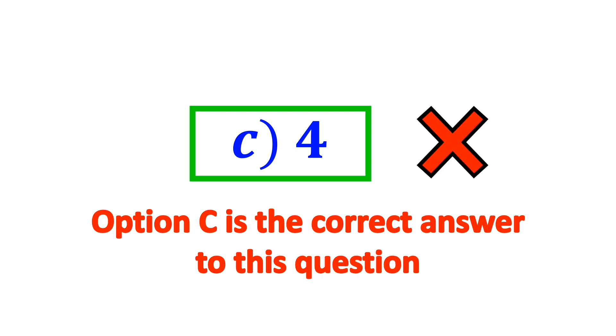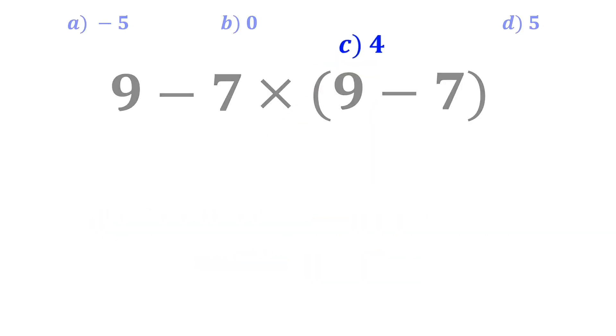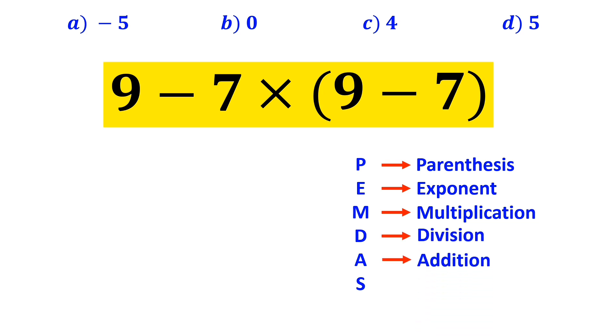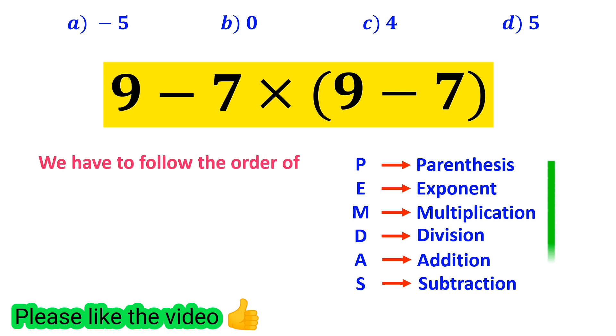But that's definitely wrong. Now let me show you how to solve this expression properly. To solve this question, we need to follow the PEMDAS rule. In this rule, P stands for parenthesis, E stands for exponent, M stands for multiplication, D stands for division, A stands for addition, and S stands for subtraction. We have to follow the order of operations step by step from top to bottom.